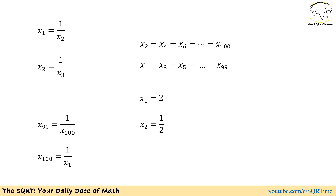Applying the equality condition throughout: 1 over x3 and so on, and for the last two we need x99 equals 1 over x100 and x100 equals 1 over x1. Substituting and simplifying, x1, x3, x5, up to x99 are all equal, and x2, x4, x6, up to x100 are all equal. Moreover, they are inverses of each other, so x1 equals 2 and x2 equals 1/2, with all other variables determined accordingly.